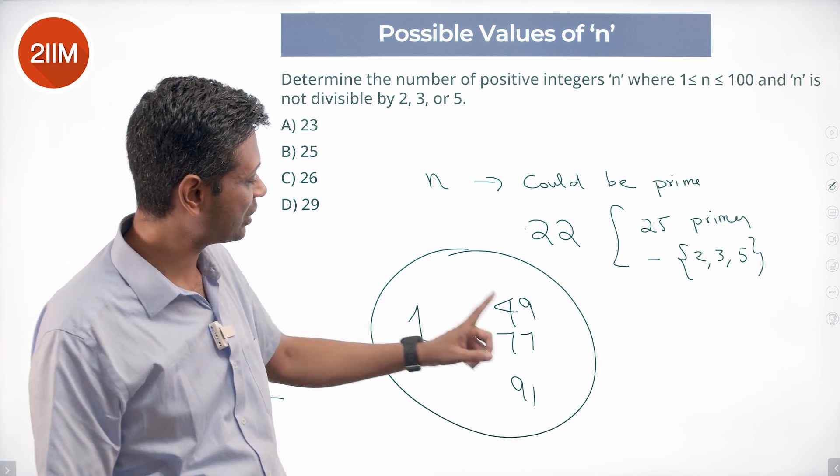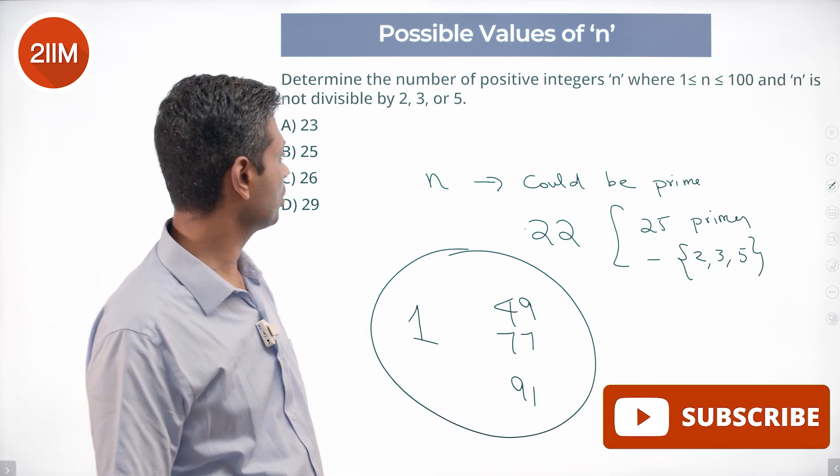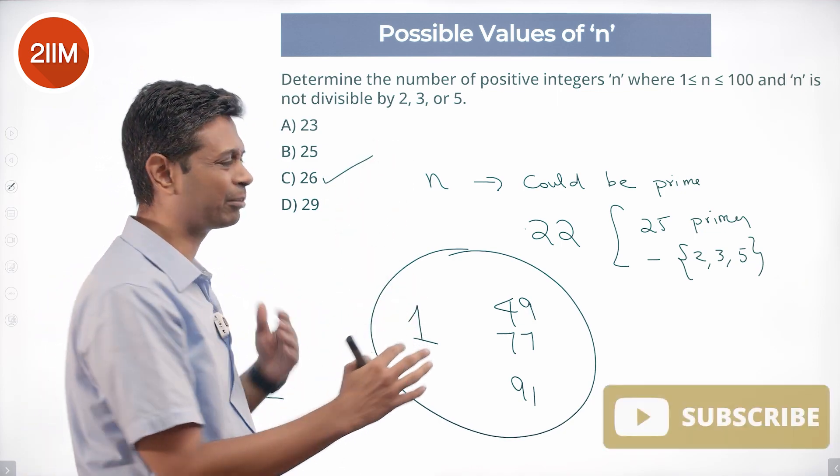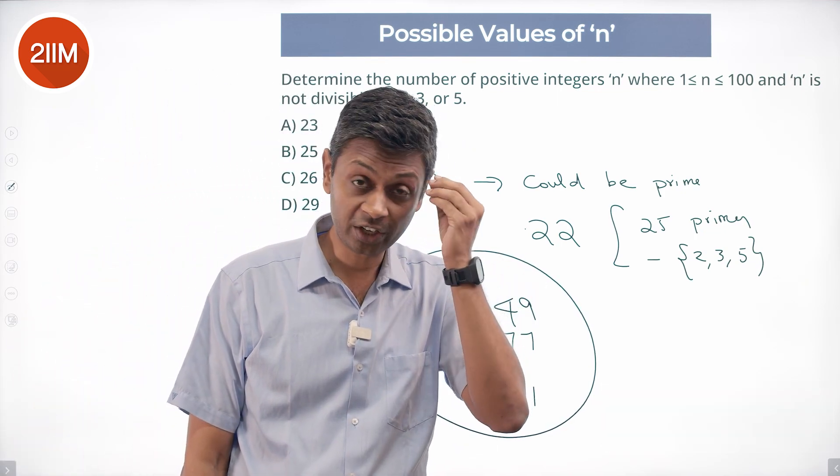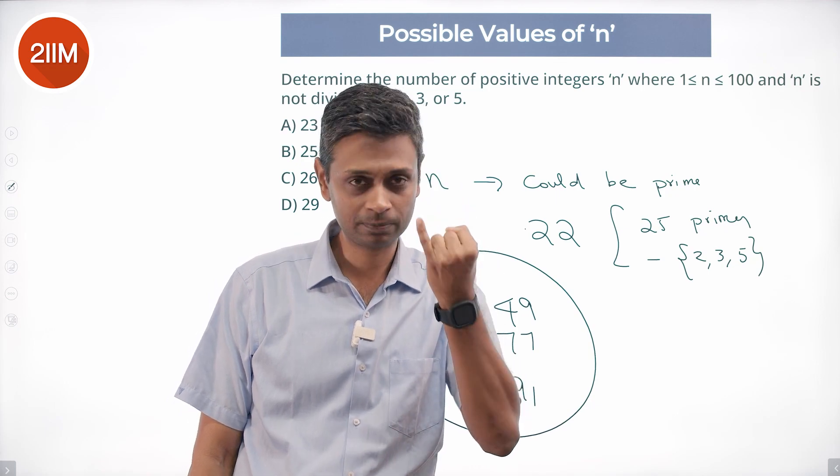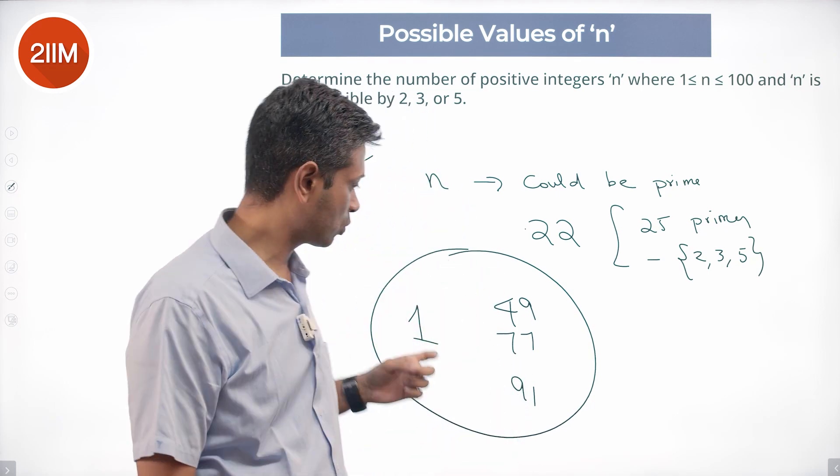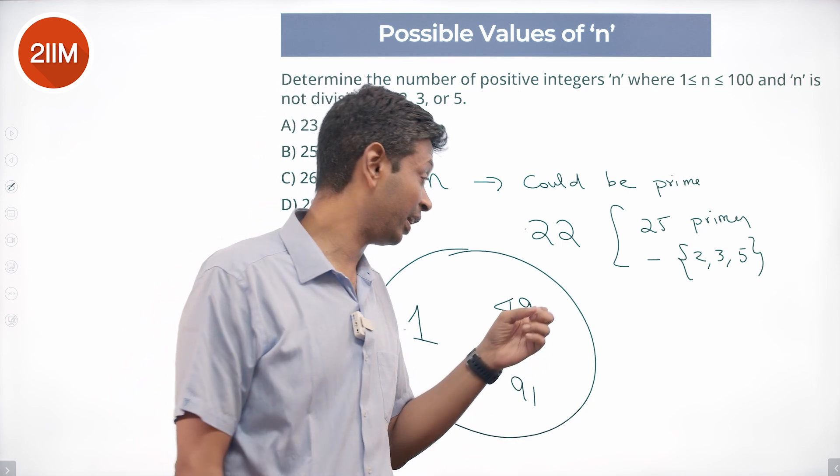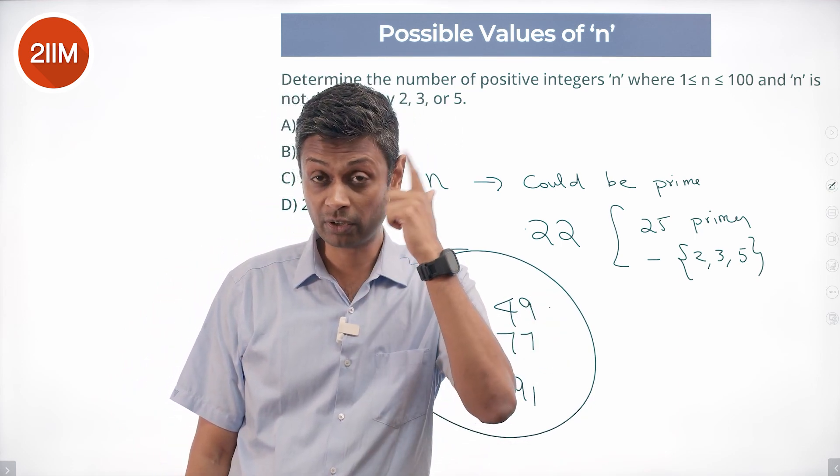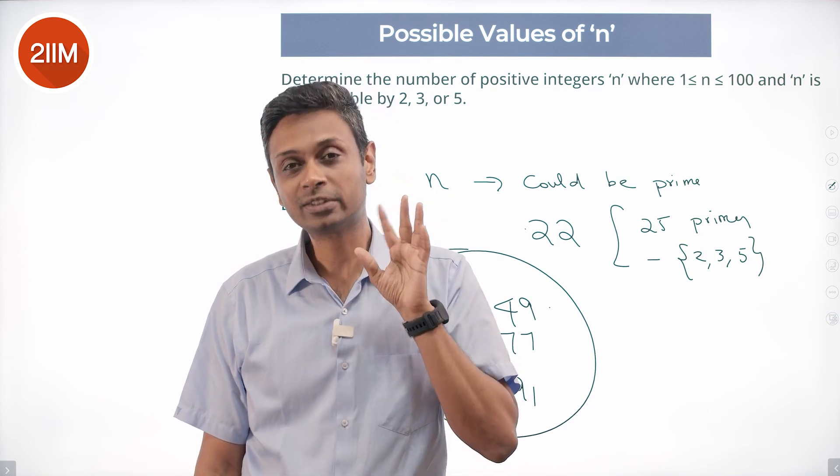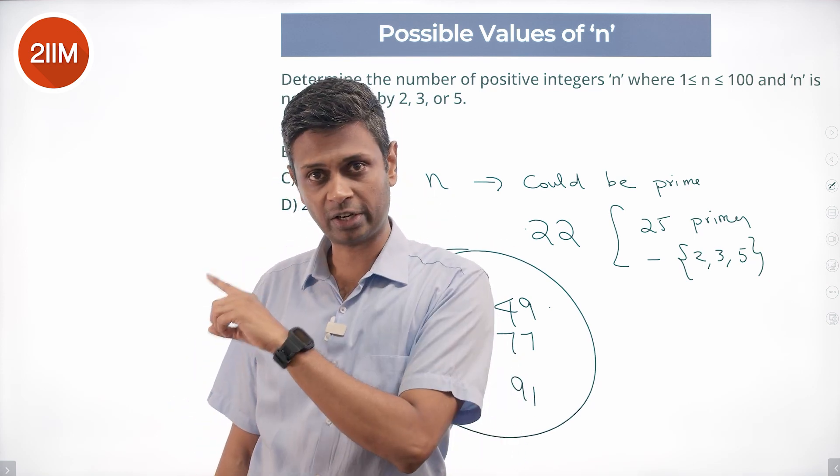And I include 49, 77, 91. Four numbers. 22 plus 4 is 26. This is a dicier method because you have to know how many primes there are, you should remember to worry about 1, you should remember to worry about 49. When I was doing it the first time around, I did 7 times 11, 7 times 13, but I completely forgot that 7 times 7 should also be included. So I got 25 as the answer. 26 is the right answer.